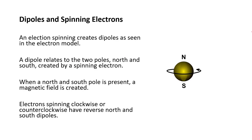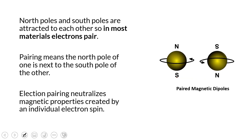Depending on whether the electron is spinning clockwise or counterclockwise - if it's spinning one direction, you'd have a north over here and south over here. But when it's spinning the other direction, you create the opposite effect - south up top and north at the bottom. These two electrons are spinning in opposite directions, which is why their north and south are switched.